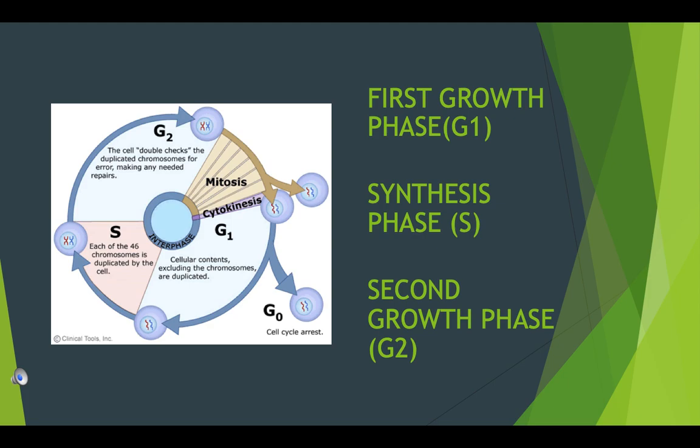A cell spends most of its time in what is called interphase, and during this time it grows, replicates its chromosomes, and prepares for cell division. The cell then leaves interphase, undergoes mitosis, and completes its division. The resulting cells, known as daughter cells, each enter their own interphase and begin a new round of the cell cycle.